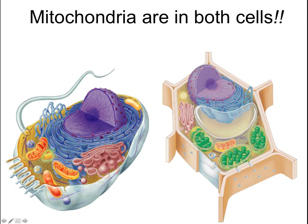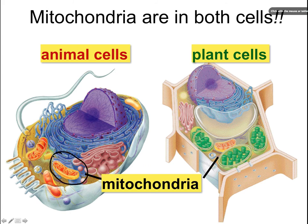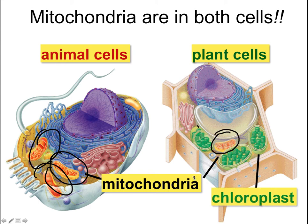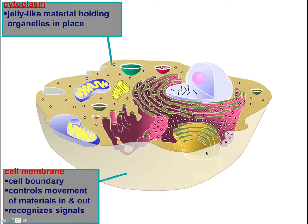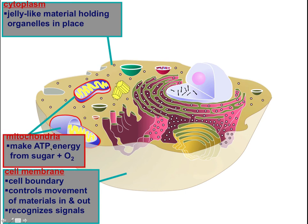Remember that mitochondria are in both cell types. We have an animal cell on the left and a plant cell on the right, and mitochondria are present in both. And there in the plant cell you can also see the chloroplasts. So to summarize: the mitochondria makes ATP energy from sugar and oxygen through cellular respiration.